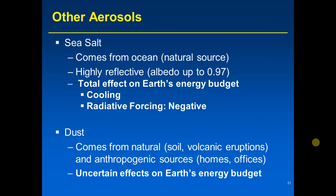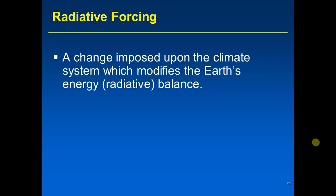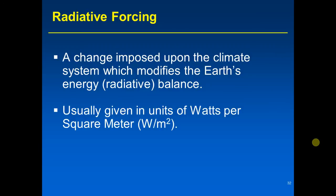Let's spend the last part of this lecture getting into more specifics about radiative forcing. Radiative forcing is a value for quantifying the forcing effects on climate — it's a change imposed upon the climate system which modifies the Earth's energy balance or radiative balance. It's a change put onto the climate system that changes the Earth's energy budget. Recall the Earth's energy budget from figure 3.38 in the textbook.